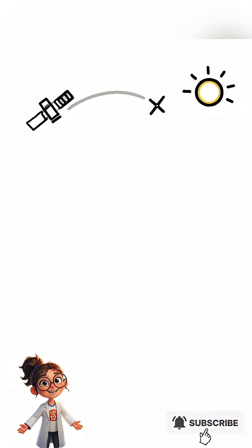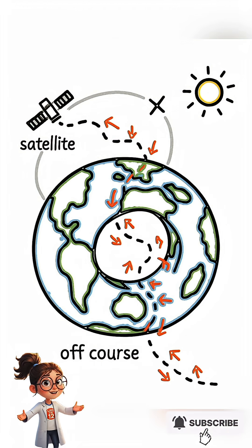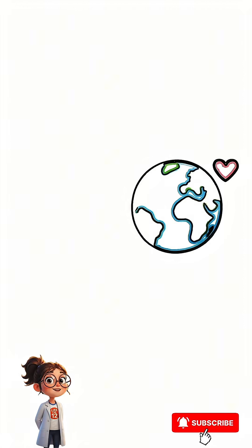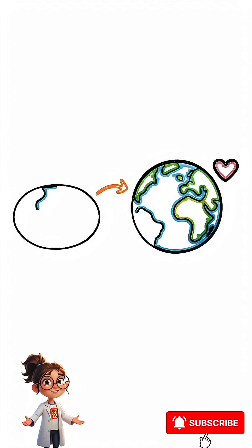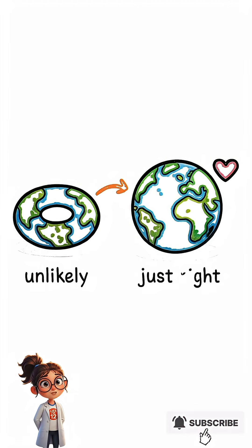Even sending up a satellite would be a nightmare. The wobbly gravity would just throw it off course. While a donut planet probably can't form naturally, thinking about it makes you realize our simple, round Earth is pretty perfect just the way it is.